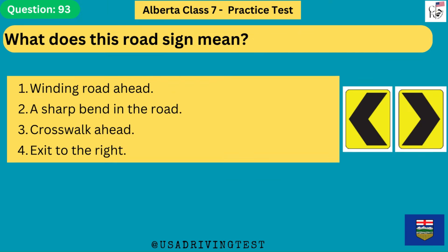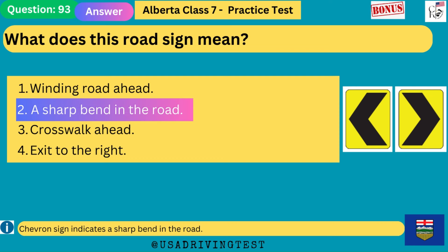What does this road sign mean? 1. Winding road ahead. 2. A sharp bend in the road. 3. Crosswalk ahead. 4. Exit to the right. The answer is 2: a sharp bend in the road. A chevron sign indicates a sharp bend in the road.